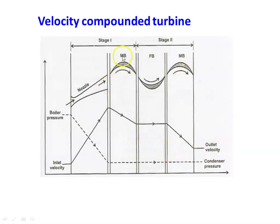The power is produced by the two moving blades — moving blade one and moving blade two — both attached to a common shaft. The velocity compounded steam turbine was first designed by Curtis, which is why it is called the Curtis steam turbine, named after its inventor.